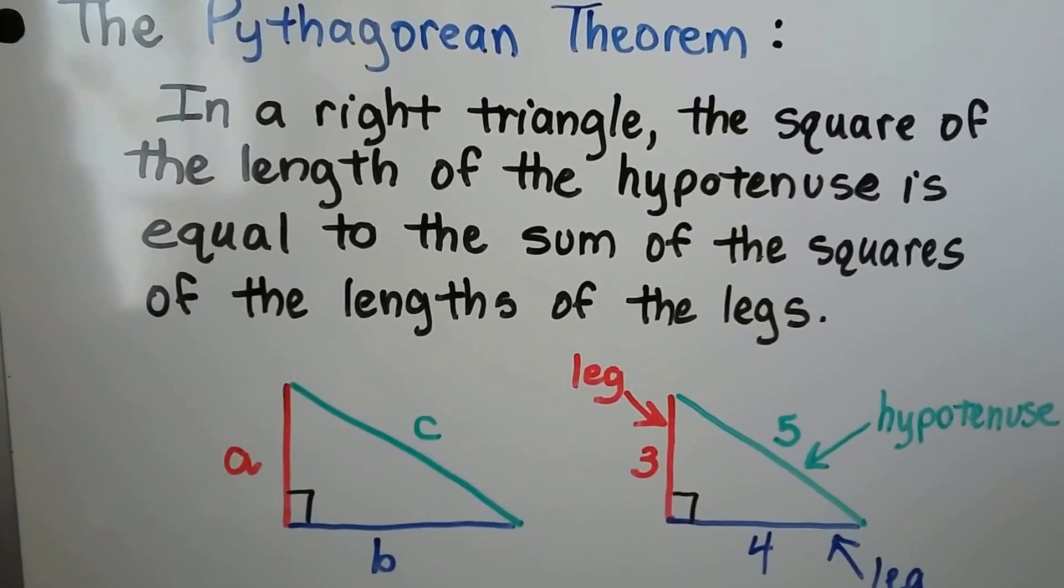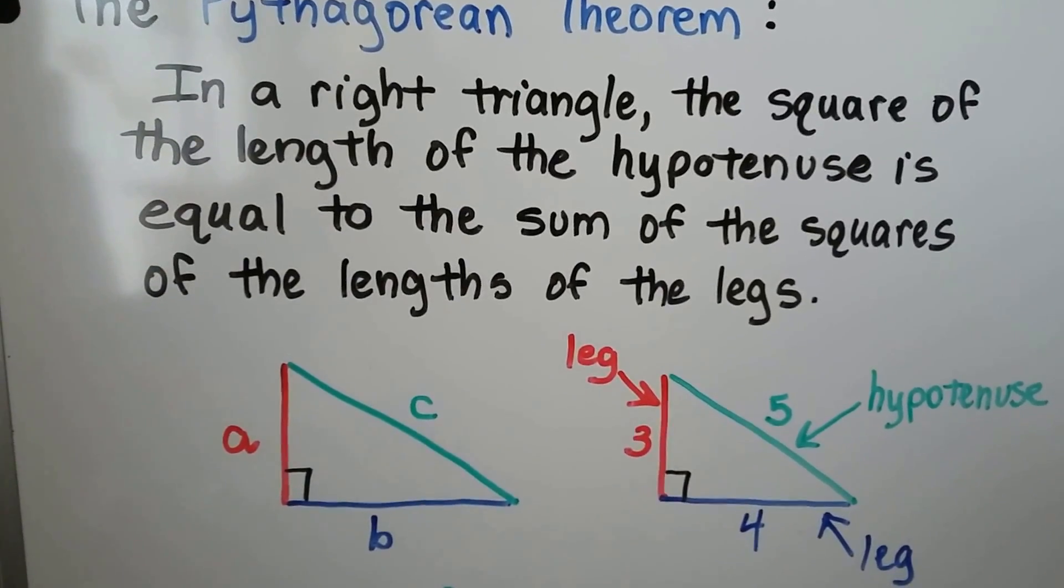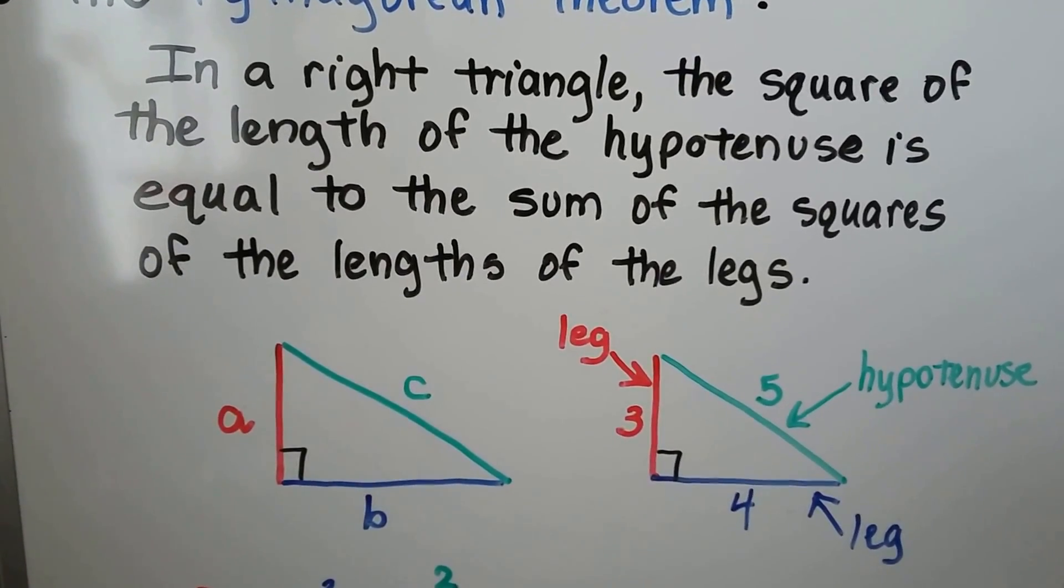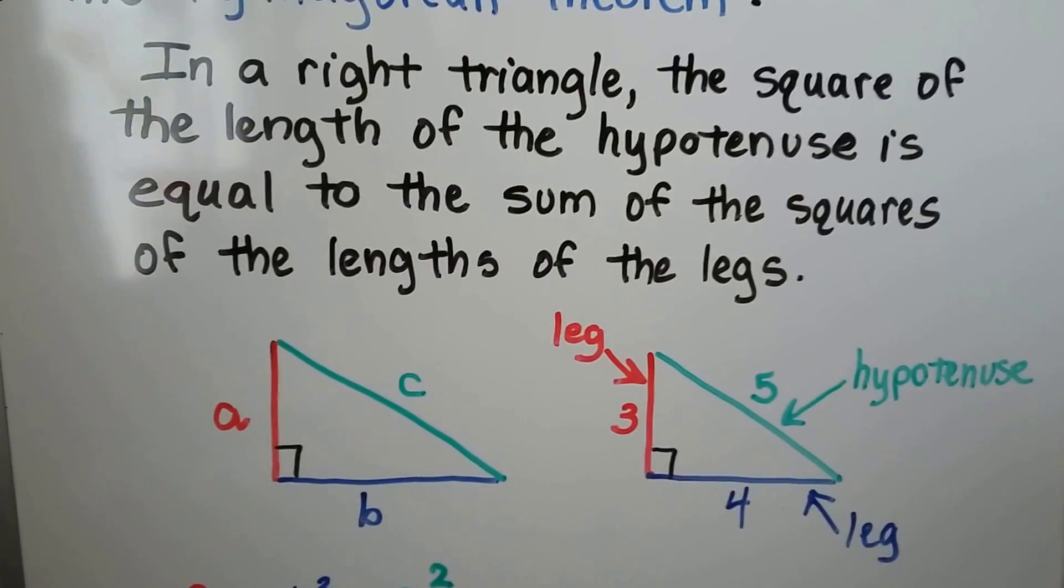The Pythagorean Theorem states, in a right triangle, the square of the length of the hypotenuse is equal to the sum of the squares of the lengths of the legs.